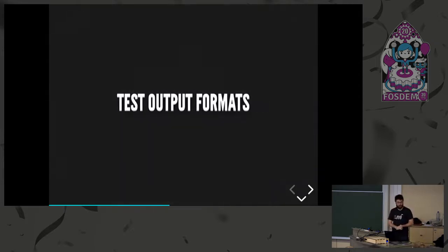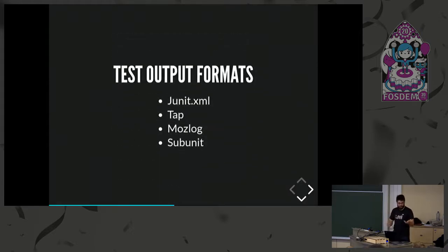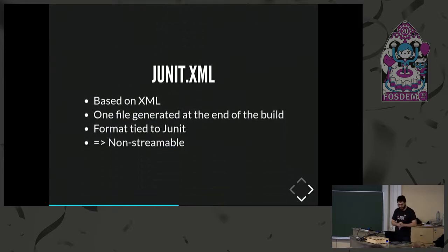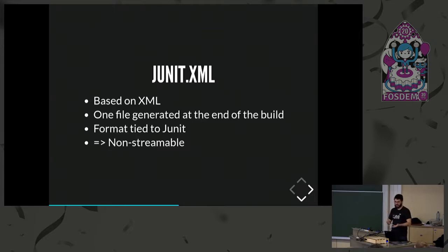There are already a couple of output formats. You might know some of them: GUnit, TAP, MozLog, and SubUnit. GUnit is based on XML. It's well-known and used in the Java community. It's one big XML file at the end of the build. Its format is tied to GUnit — there's no independent definition of it — and it's non-streamable. Since it's one big file at the end, you need to wait for the build to finish before consuming it.